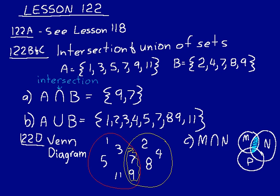That's all Venn diagrams are—they're just another way to represent a set, and it helps you with understanding the properties of intersection and union. Okay, well that's all for lesson 122.